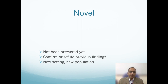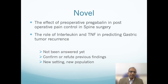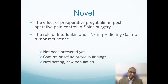The study must be novel — something not yet answered, which must either confirm or refute previous findings, or be in a setting or population that has not been studied yet. For example: the effect of preoperative pregabalin on postoperative pain control in spine surgery, or the role of interleukins and TNF in predicting gastric tumor recurrence — these may be novel, may not have been answered yet, or may be refuting previous findings, so they are interesting enough to pay attention to.